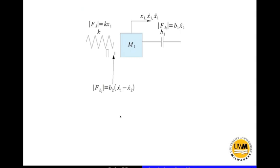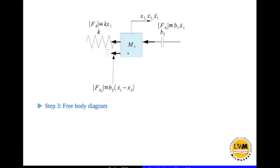Next we do the free body diagrams. These are all the connections for M1. If M1 moves forward with x1 dot and the wall end is fixed, the damper B1 gets compressed. Its natural tendency is to oppose the motion, so this damper exerts a force in the negative x direction on M1. For the spring, this end is fixed and this end is moving forward, so the spring is in extension. The natural tendency of the spring is to pull inward, so the spring also exerts a force in the negative x direction on M1. Similarly, the middle damper is in extension as configured, so its natural tendency is to return to its original position, exerting a force in the negative x direction on M1.